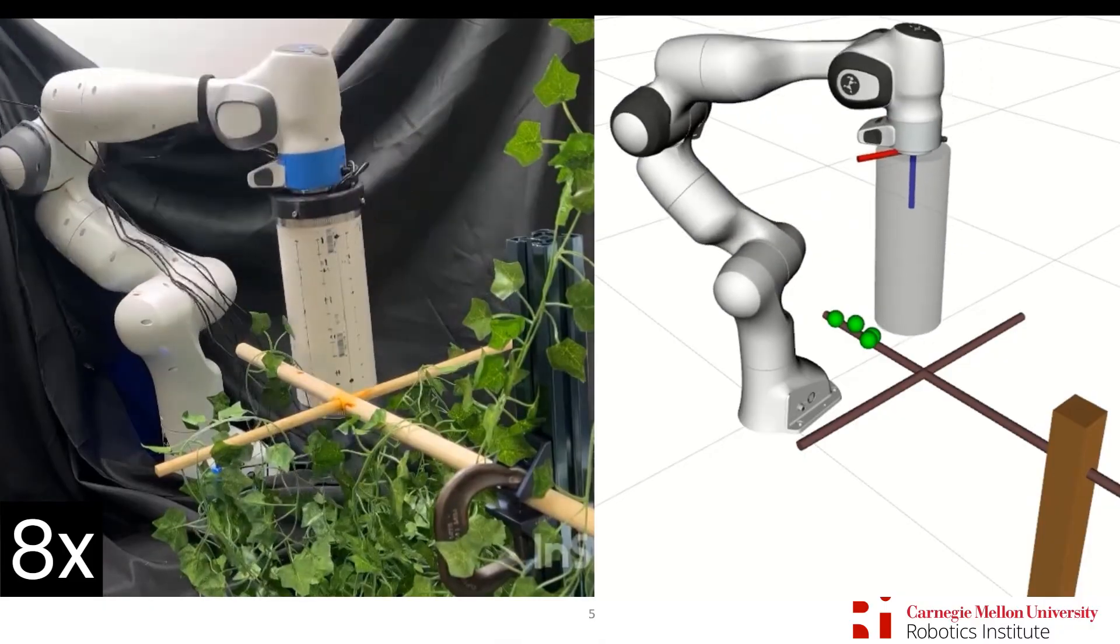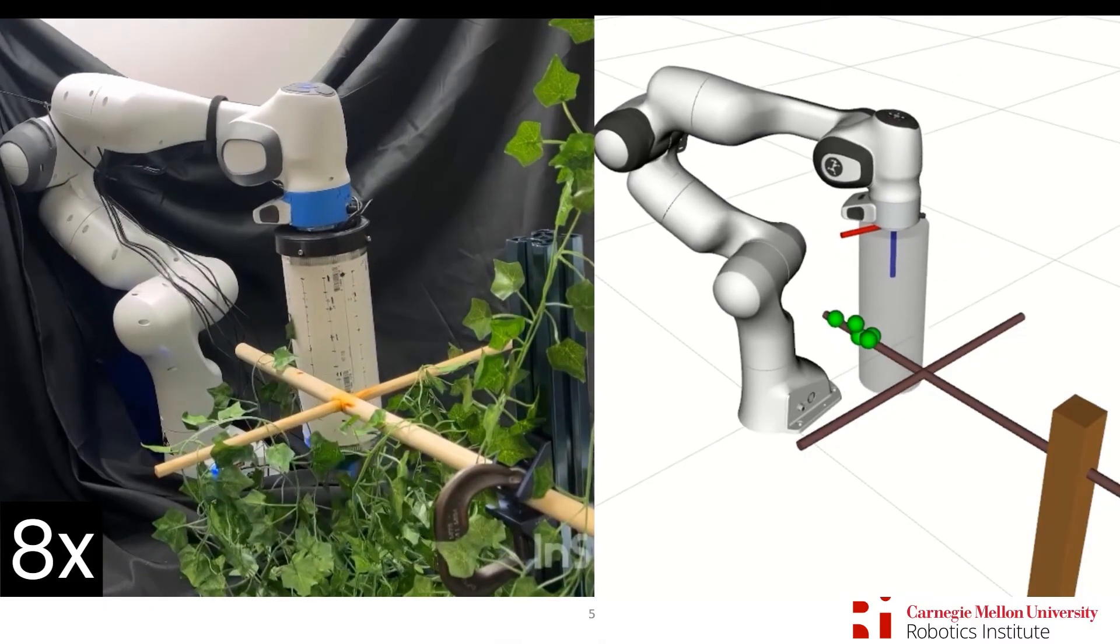The robot makes multiple contacts and predicts where the branch is, shown in green.